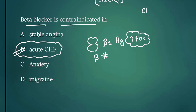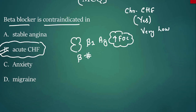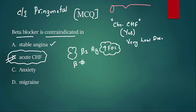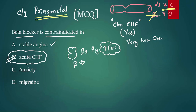In chronic CHF, beta blockers can be given, but we start at a very low dose and gradually increase. Beta blockers are used in stable angina, but are contraindicated in Prinzmetal (variant) angina because the problem is coronary vasospasm — blocking beta-2 causes vasoconstriction to predominate and worsens the spasm. Beta blockers can be used for performance anxiety and migraine prophylaxis. The answer is acute CHF.